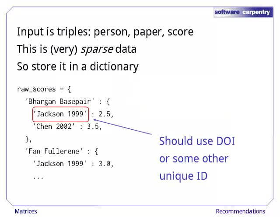Of all the millions of papers out there, most people have only read a few. Since almost everyone has no opinion on almost every paper, the data is very sparse. A good way to store sparse data is in a dictionary for each user, where each rating is stored as a unique paper identifier and rating, and papers that were not rated are not stored at all.